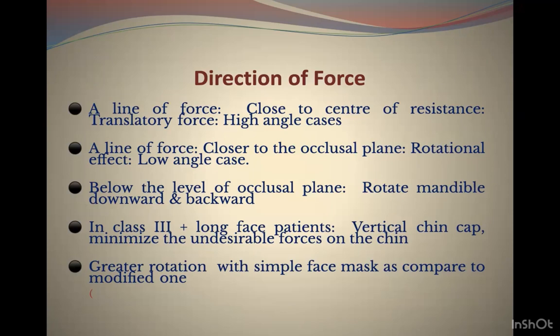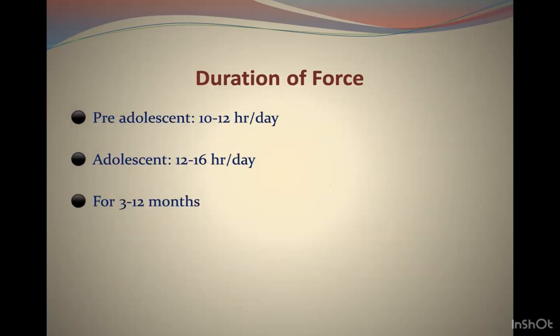If the line of force is below the occlusal plane, it rotates the mandible downward and backward. In Class 3 cases with a long face, a vertical chin-up direction can reduce bite opening and vertical length increase. The key advantage of Nanda's modified face mask is passing forces through the center of resistance with the hook near the premolars, producing less rotation, less bite opening, and less high-angle increase.